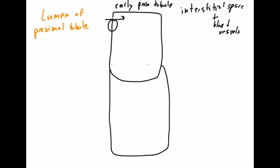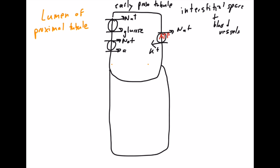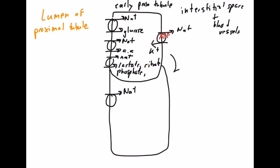The early proximal convoluted tubule is well-known for absorbing a ton of stuff, and it uses sodium as the primary driving force. The sodium gradient is powered by sodium-potassium ATPase. So sodium is going to draw in glucose, amino acids, citrate, phosphate, and lactate on a co-transporter mechanism using secondary active transport. This is what the proximal convoluted tubule is super good at — reabsorbing all these organics.